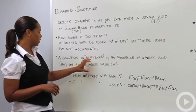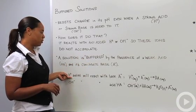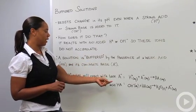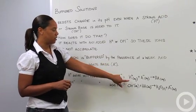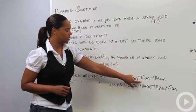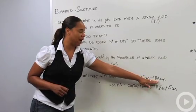If you have a buffered solution and you add a proton in H+, it will react with the base, with the conjugate base, and so then you have the proton plus the conjugate base to give you back your weak acid.